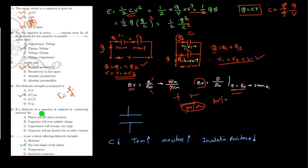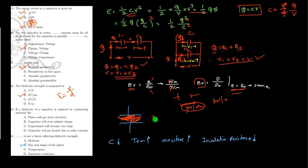If the dielectric plate of a capacitor is replaced by a conducting material, what will happen? If you fill the capacitor with a conducting material, the two plates get shorted. Due to the conducting material acting like a short circuit, the plates get shorted.